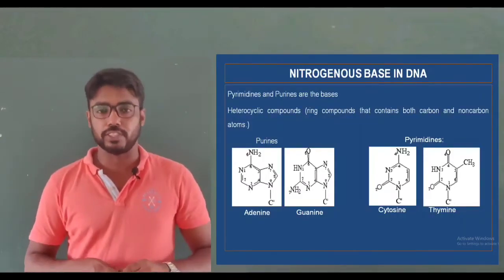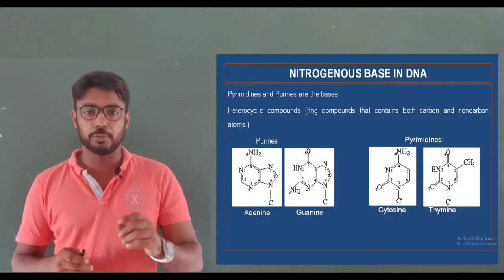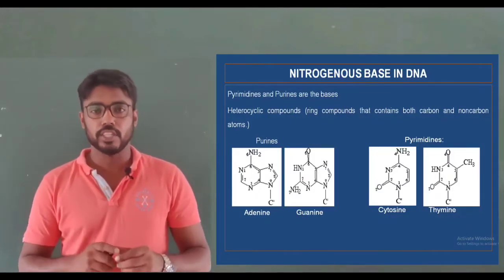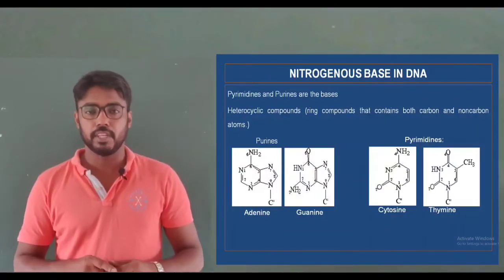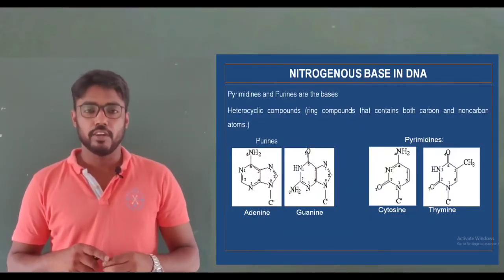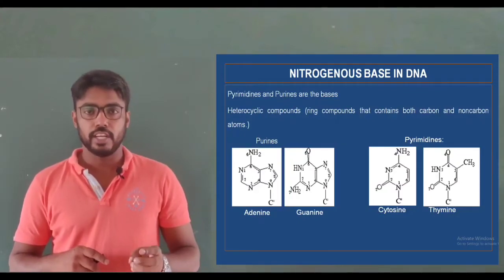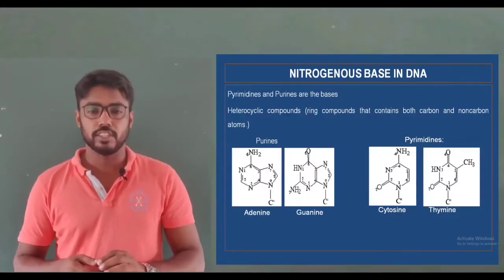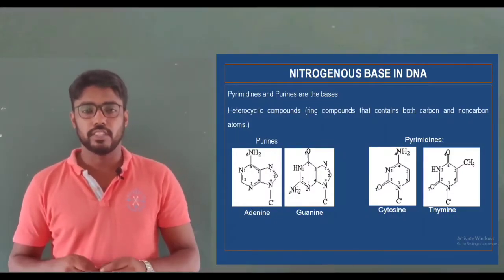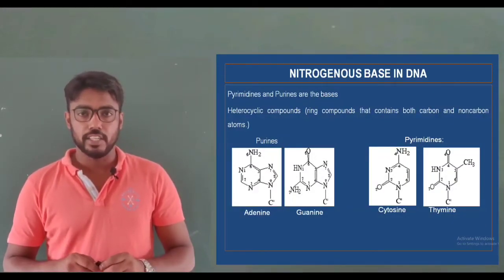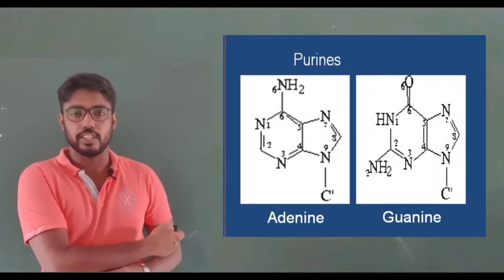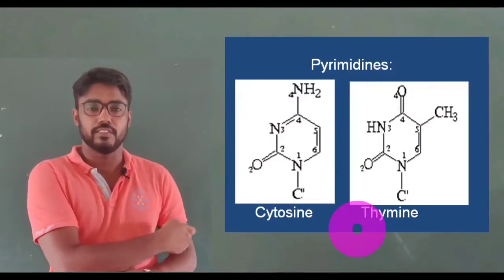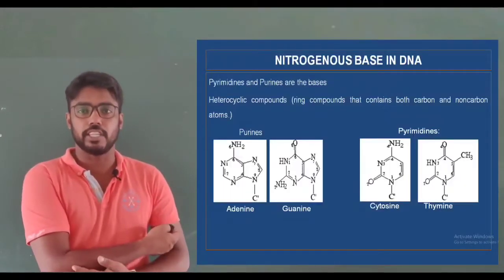Let's see the nitrogenous bases present in DNA. There are two groups of nitrogenous bases: purines and pyrimidines. These bases are heterocyclic compounds that contain both carbon and non-carbon atoms. In the purine group, there are two bases: adenine and guanine. In DNA, there are two types of pyrimidine bases: thymine and cytosine. In this figure, you can see the two purine bases and the two pyrimidine bases present inside the DNA.